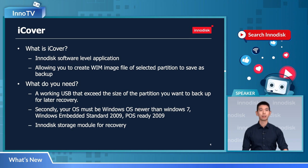First, I'm going to start with iCover. So what is iCover? iCover is an InnoDisk software-level application which can make your partitions into a WIM image file for later recovery.